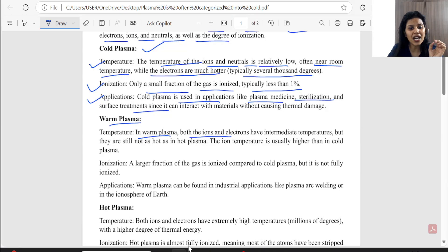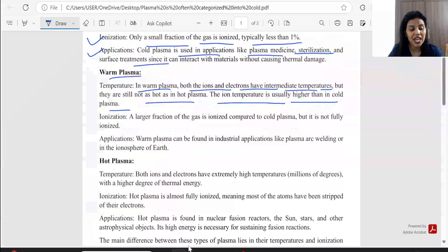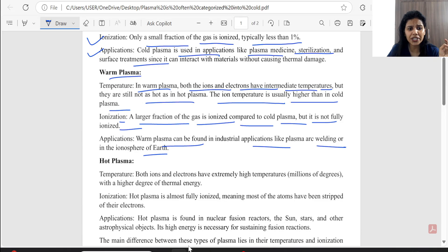What is in warm? In warm, both the ions and electrons have intermediate temperature. This means the temperature of both ion and electrons have extremely high temperature, millions of degrees, with a higher degree of thermal energy.